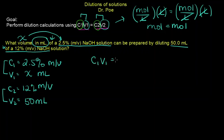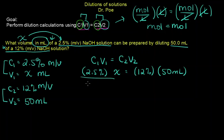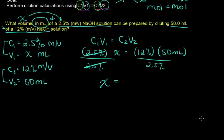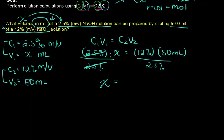So now let's go ahead, rewrite the equation. C1V1 equals C2V2. And now let's plug it in. C1 is 2.5%. V1, we don't know what that is. C2 is 12%. And V2 is 50 mils. We want to solve for x. So what we're going to do is divide both sides by 2.5%. And you see this cancels, same number, same units. And we get x equals, you multiply the 12 and the 50, divide by the 2.5. These units cancel.